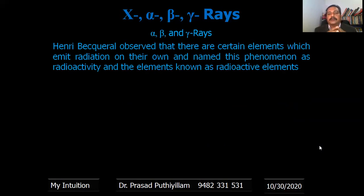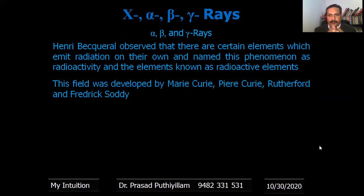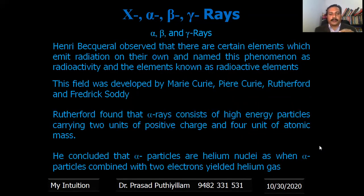Alpha, beta and gamma rays. Henri Becquerel observed that there are certain elements which emit radiation on their own and named this phenomena as radioactivity. That means certain elements emit radiation. Those elements are called radioactive elements. This field of research was continued by Marie Curie, Pierre Curie, Rutherford and Frederick Soddy. Rutherford found that alpha rays consist of high energy particles carrying two units of positive charge and four units of atomic mass. He concluded that alpha particles are helium nuclei because when alpha particles are combined with two electrons, one alpha particle combined with two electrons produces helium gas. Therefore Rutherford concluded that alpha particles are made up of helium nuclei.